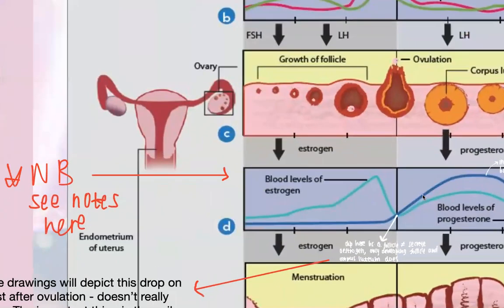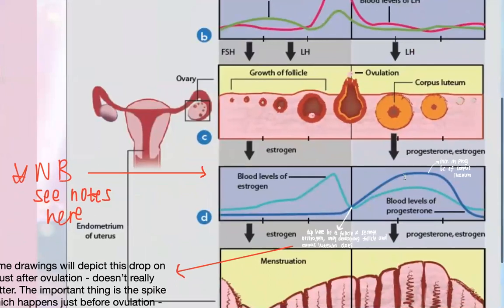There is an increase in progesterone later in the cycle because the corpus luteum is quite large. There's a drop in estrogen once the Graafian follicle has formed, because the Graafian follicle itself does not secrete estrogen. Only the developing follicle — before it becomes a Graafian follicle — and the corpus luteum secrete estrogen. So at the stage of Graafian follicle, no estrogen is released.